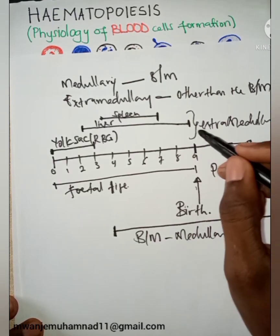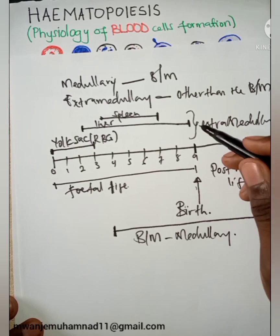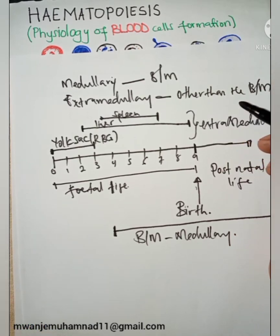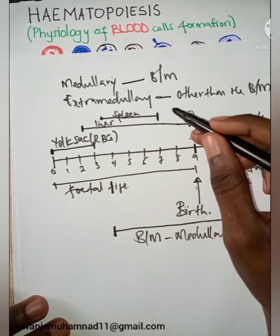At birth, most of the sites that produce blood cells other than the bone marrow would stop. But this does not necessitate that extramedullary hematopoiesis only occurs in the fetal life.